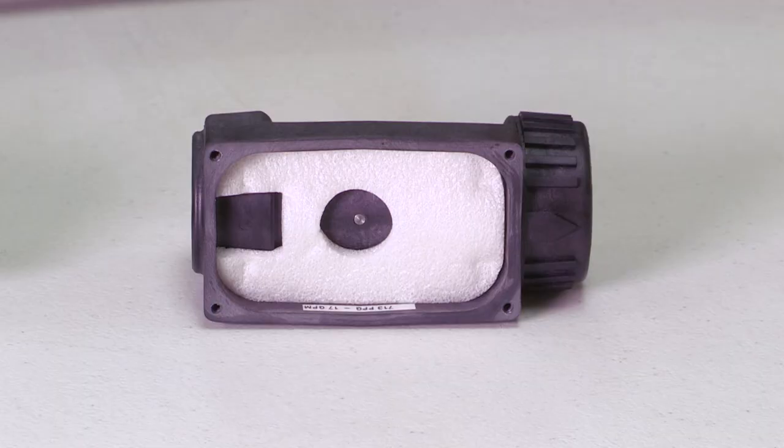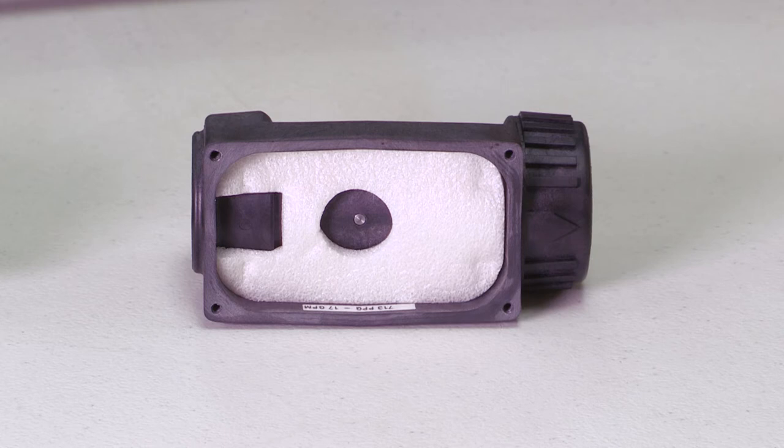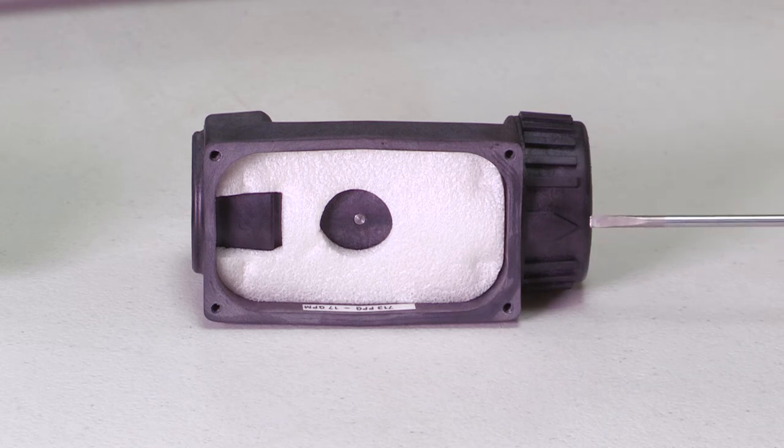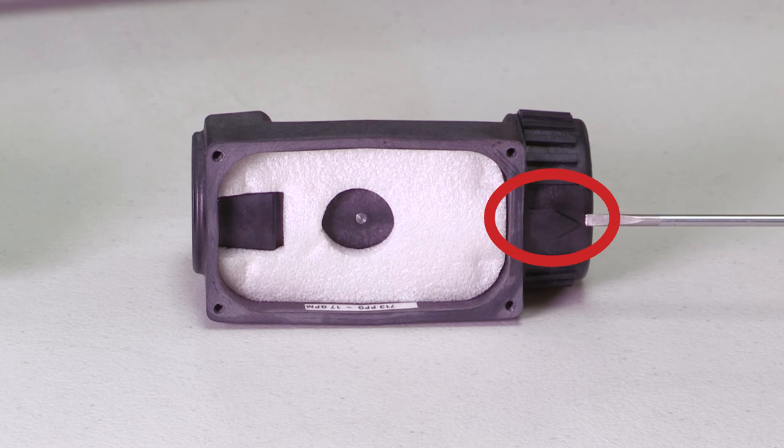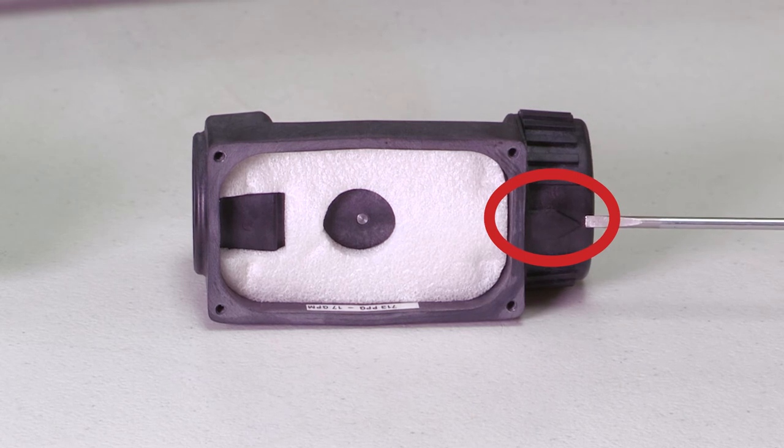When reassembling the recording meter to the water pipe assembly, make sure that you install the mechanical portion of the recording meter in the proper direction. There is a directional arrow on the top of one of the outlets and you want to make sure that you always have that pointed towards the rear of the unit.